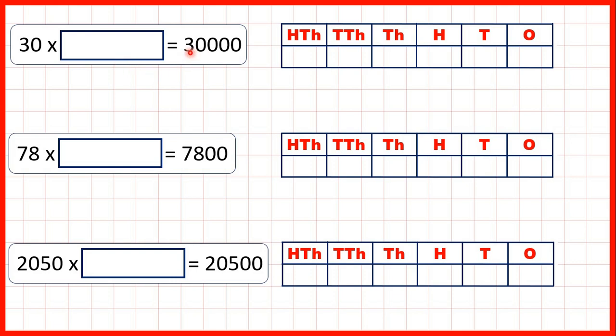Because if we look at the number in our answer, we have the number in our question but with zeros on the end. So here we have 30 with three zeros on the end, here we have 78 with two zeros on the end, and here we have 2050 with one zero on the end.